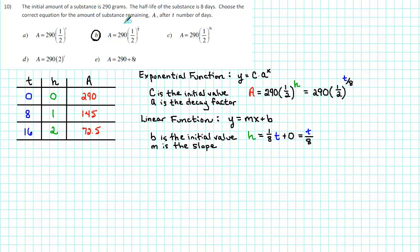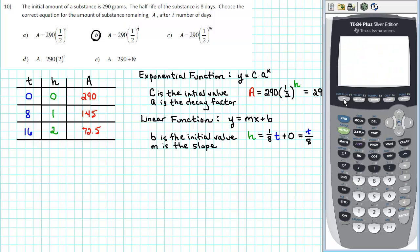We can use a graphing calculator to verify that. First, we go to Y equals to enter our equation. In the given equation, A is the dependent variable and T is the independent variable. On our calculator, we use Y to represent the dependent variable and X to represent the independent variable. So we'll enter Y1 equals 290 times 1 half raised to the X over 8. Now when you're raising 1 half to the X over 8, make sure that you put the X over 8 in parentheses.